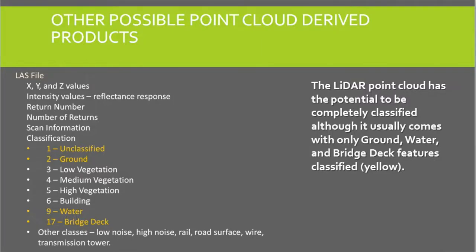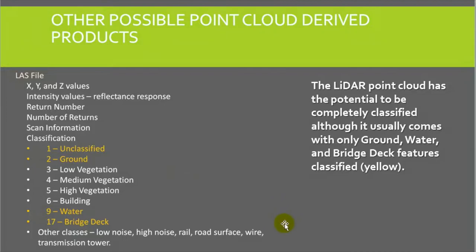The point cloud data maps not only the surface information, but also the above-surface information. This comes from the actual process of the LIDAR pulse hitting the ground or hitting anything else it comes in contact with. When it comes back and is recorded on the LIDAR device, it records not only the X, Y, Z value, but also the intensity — how strong the value was — the return number, and with the most recent LAS data or .LAS type datasets, each point can also be classified.